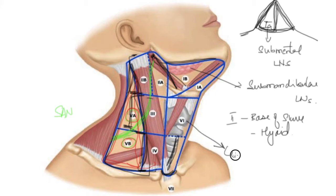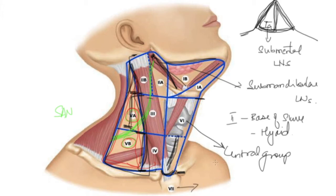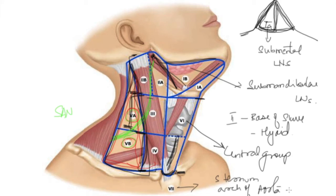Level 6 is the central group of nodes, extending from the hyoid down to the sternal notch. Level 7 is the retrosternal or mediastinal part — extending from the sternum up to the arch of the aorta. That completes our overview of the lymph node levels.